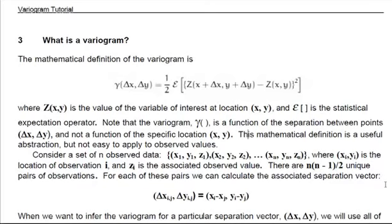Gamma of delta x comma delta y equals one-half e, that's the expected value operator that we saw before, which we can think of as the average, of z of x plus delta x comma y plus delta y, and then minus z of x comma y, and then that whole thing is squared.